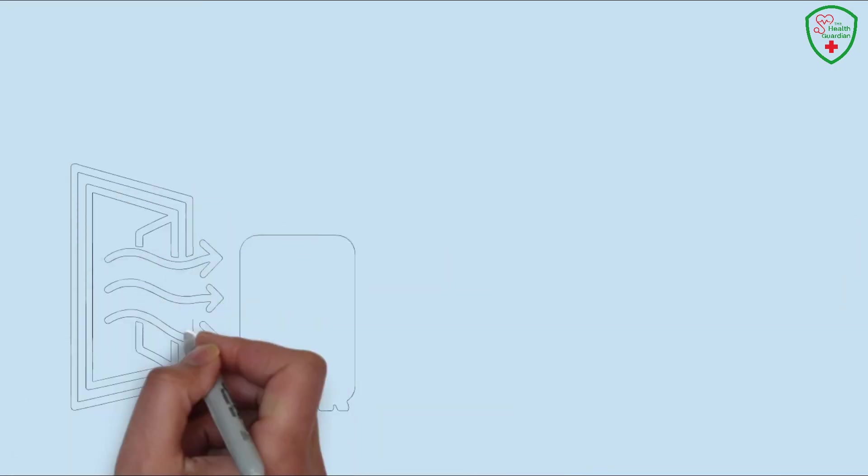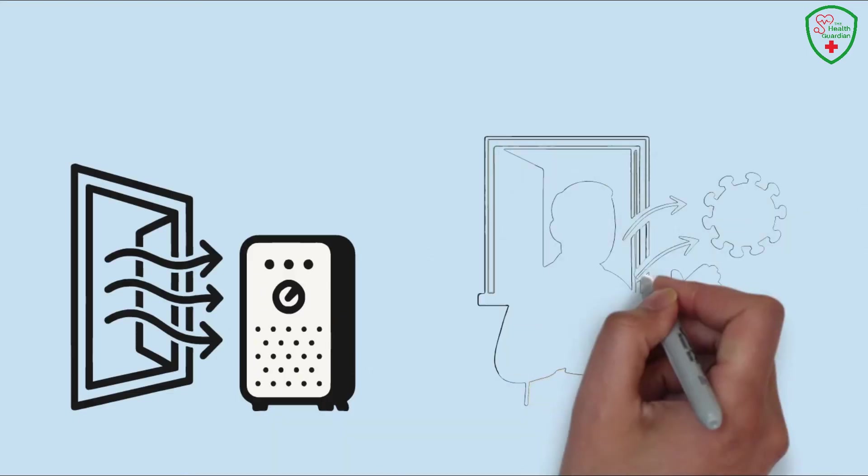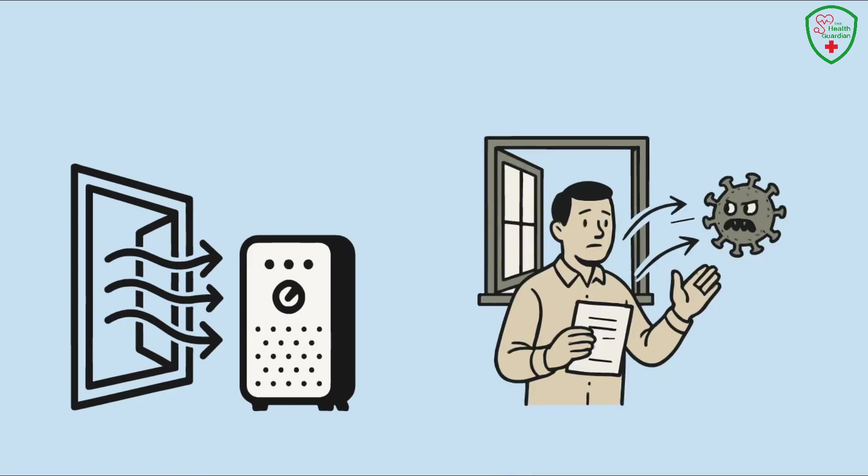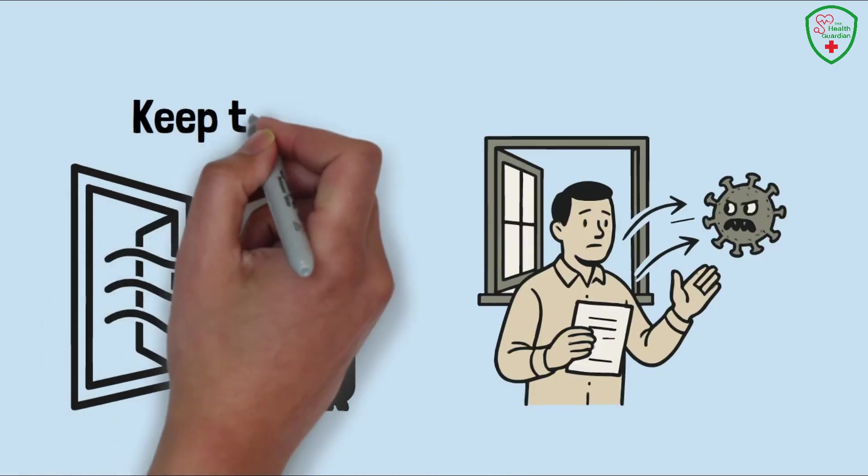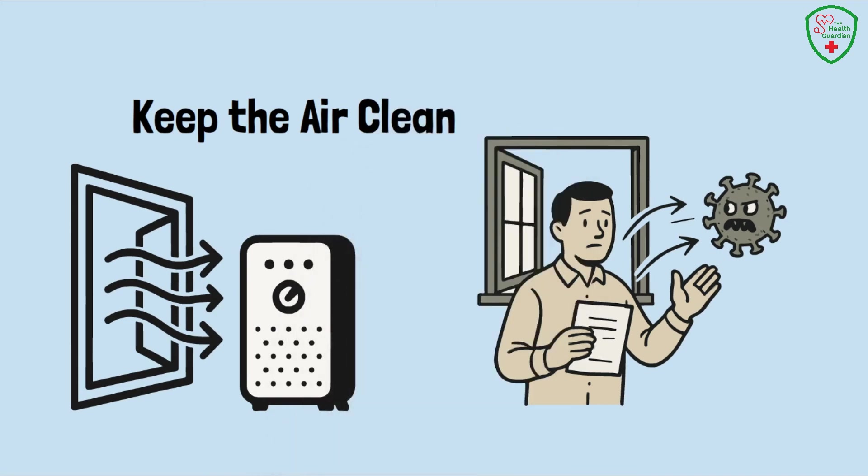Ventilation is a secret weapon, especially with how contagious KP.2 and KP.3 are. Crack open a window at home or work or invest in an air purifier. It's like giving the virus an eviction notice before it can settle in. Studies show good airflow can cut transmission risk big time.